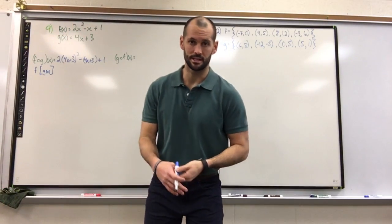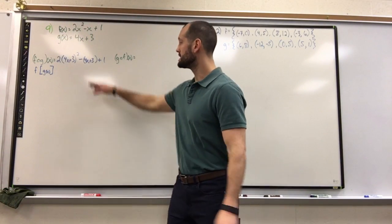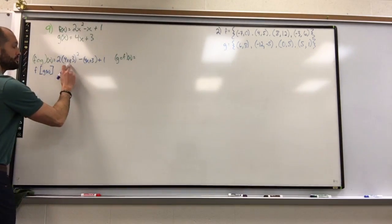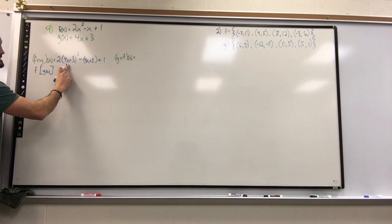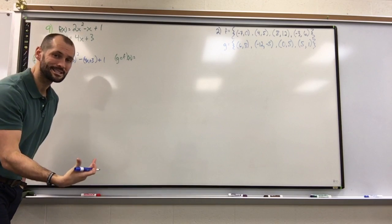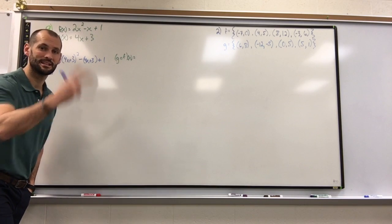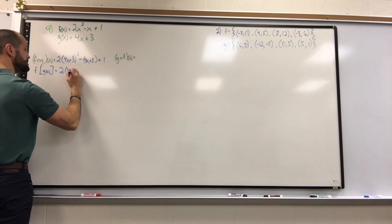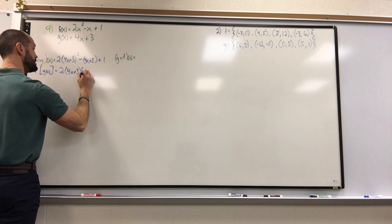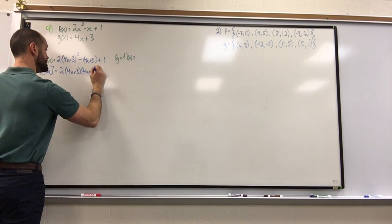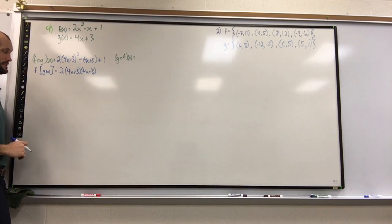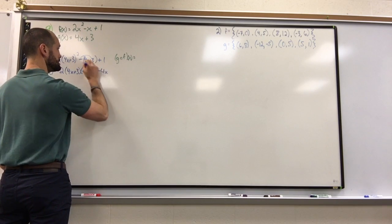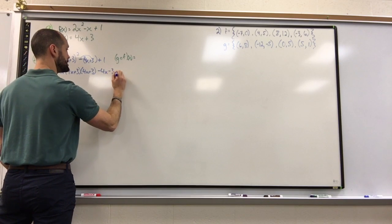Now be careful here: that is not sixteen x squared plus nine. When you square a quantity, it's so nice you write it twice, which means I'll have two times (4x + 3)(4x + 3). That is what's going on. Might as well distribute the negative now, then I'll have minus 4x minus 3 plus 1.